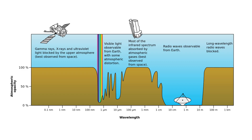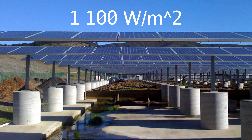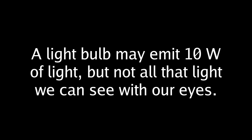On Earth, some of this light is filtered, so even on a cloudless day the irradiance would only be about 1100 watts per meter squared. Now, how bright is it inside in comparison to how bright it is outside? Well, this is where things get complicated. A light bulb may emit 10 watts of light, but not all the light emitted by the light bulb we can see. There are certain types of light that are invisible to our eyes.